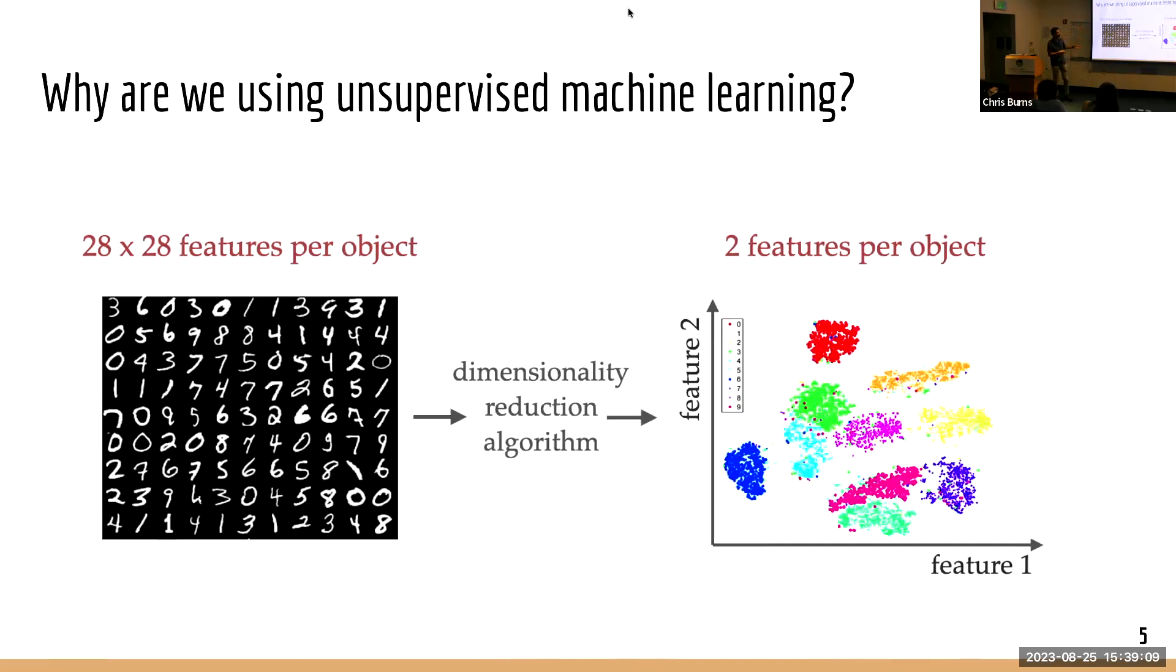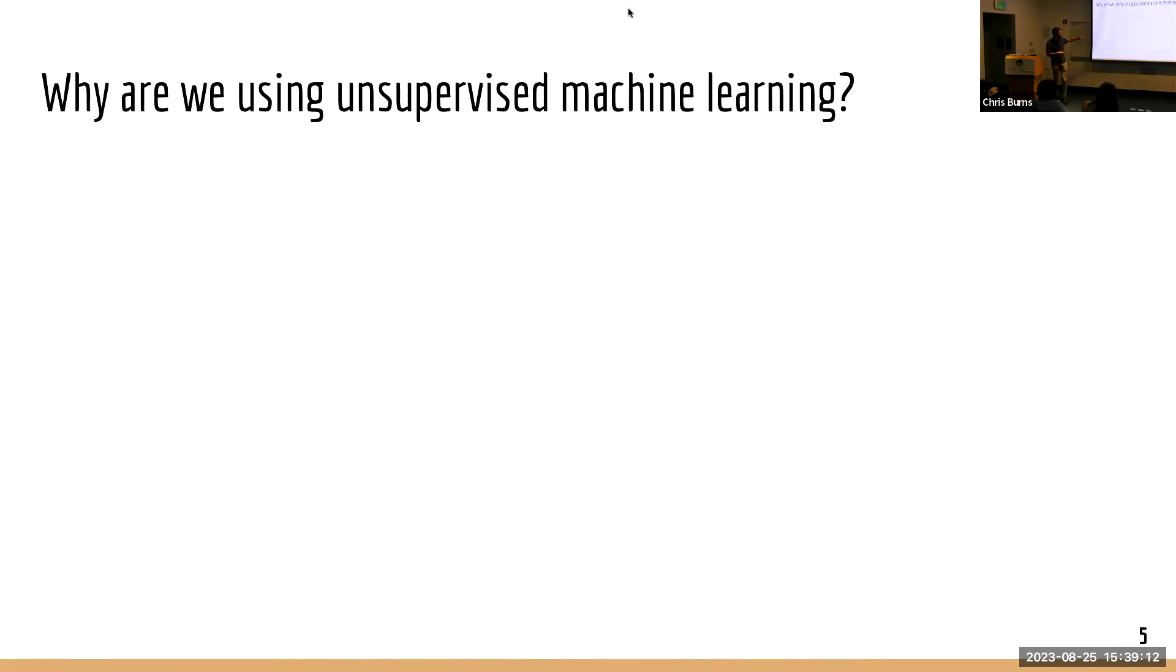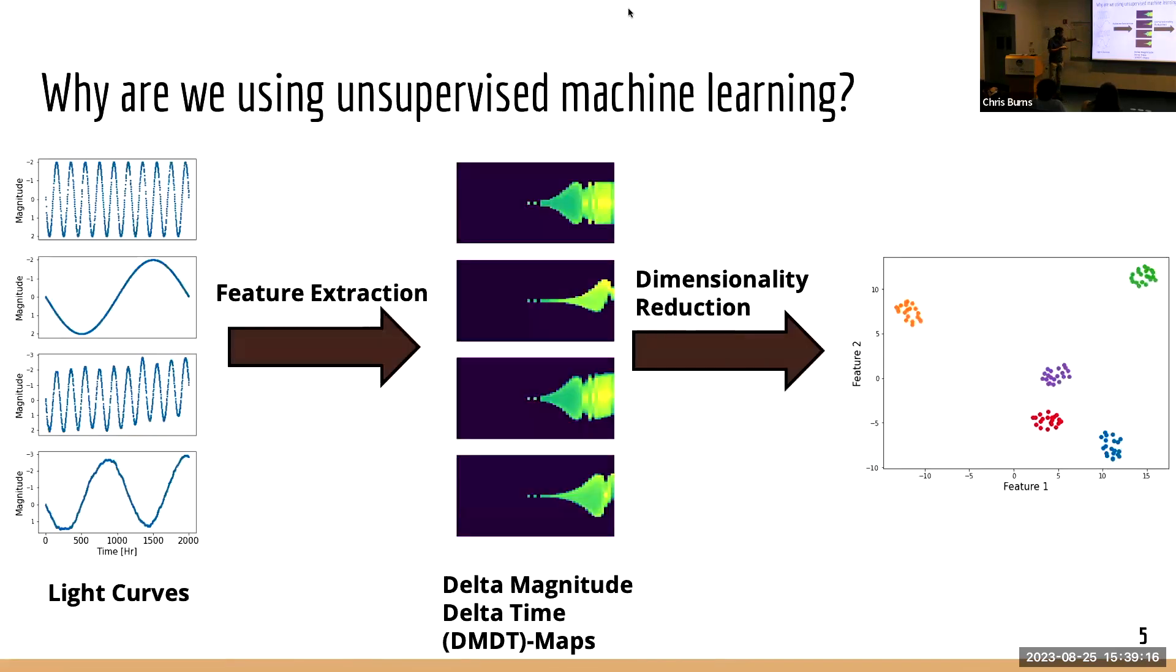So we intend on applying a very similar technique, but instead of looking at these digits, we're looking at using light curves and representing light curves as points in 2D feature space. We're taking a set of light curves and extracting a set of features from these light curves. You can think of these grids, these delta magnitude delta time maps, which I'll get into very shortly, kind of as those digits from the MNIST data set. Then we're applying our dimensionality reduction to these sets of DMDT maps and observing these clusters corresponding to the different types of classes of sources.